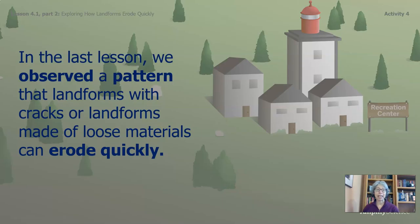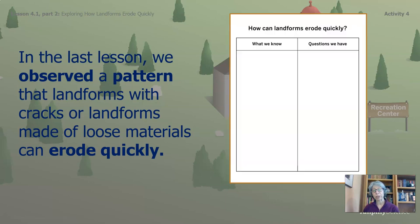Alright, in the last session we observed a pattern that landforms with cracks, or landforms made of loose materials, can erode quickly. You may want to return to this part of your packet and look at the questions that you wrote. You might have answers to those questions, and those answers can be moved to the What We Know column. And you may have new questions. You can use this throughout the rest of this chapter as well.